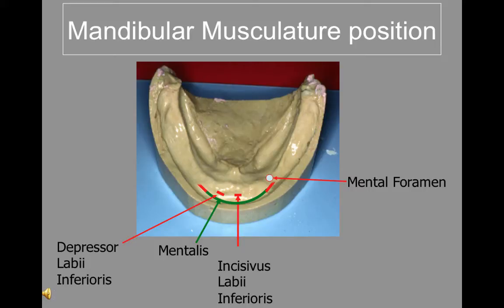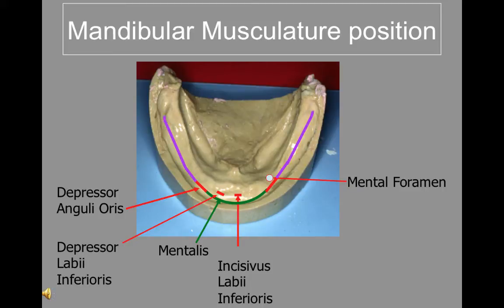The depressor anguli oris affects the position of the buccal frenum when functioning and it can dislodge the denture when it contracts. It is positioned in the area where the canines used to be located. Buccinator provides support and mobility for the tissues of the cheek. It originates from the pterygomandibular raphae, or ligament, and follows the external oblique line to the mesial aspect of the first molar and then ascends towards the corner of the mouth.